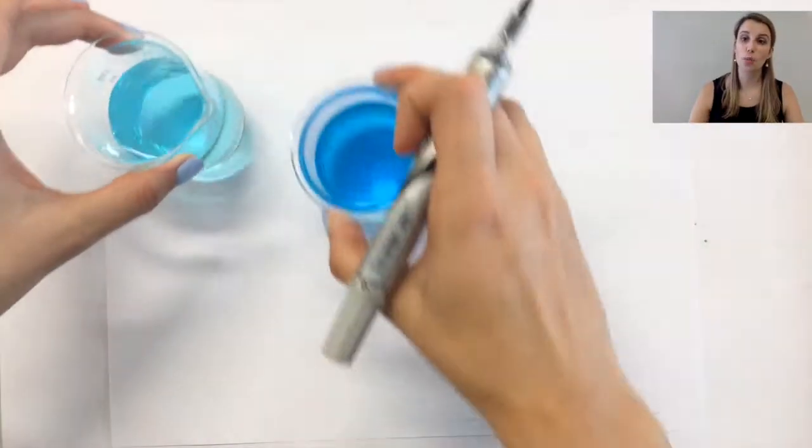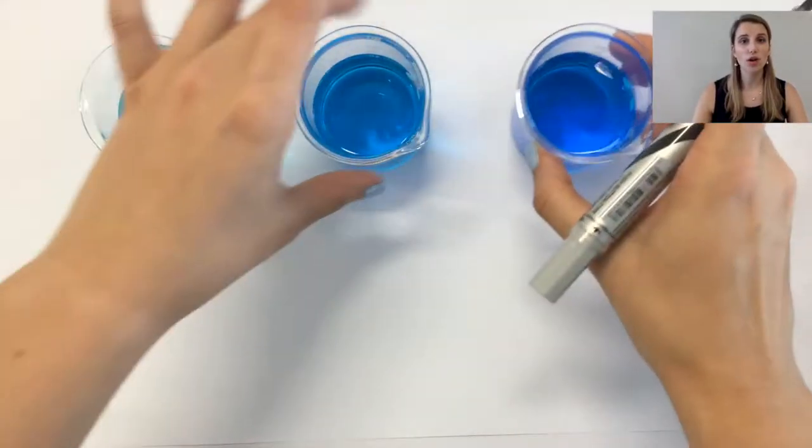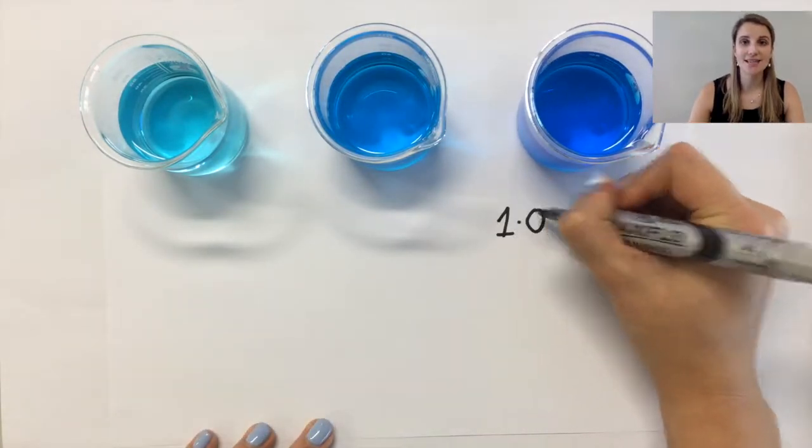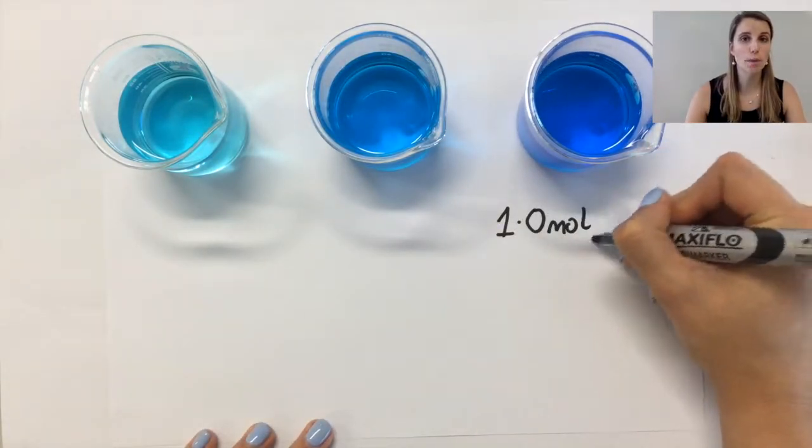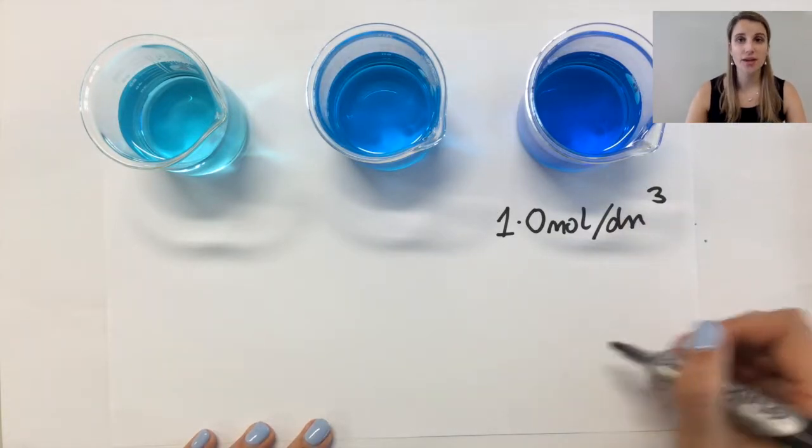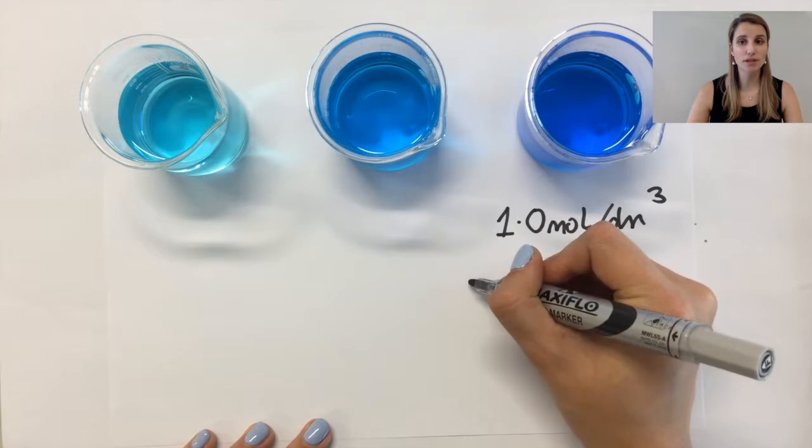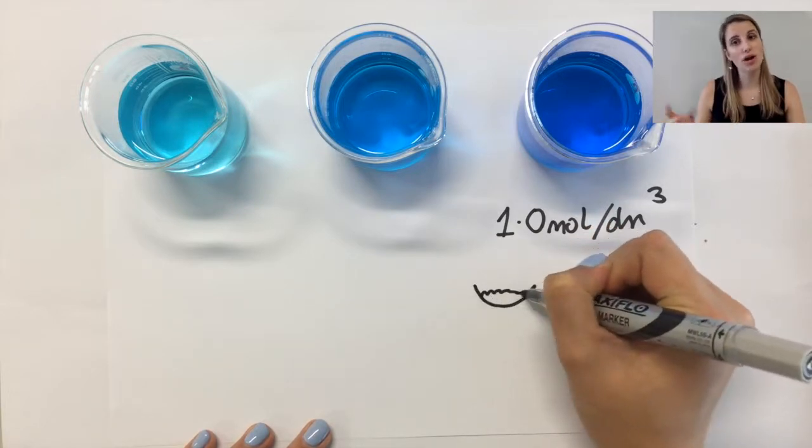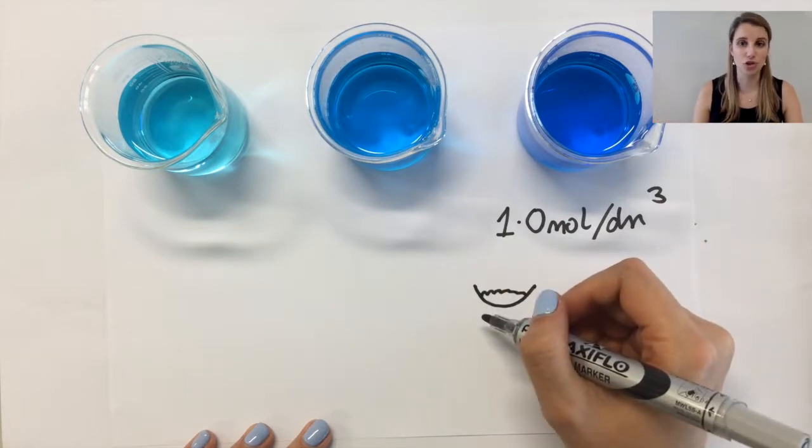Let's go back to our copper sulphate samples. The one on the right, the most concentrated of my three samples, is actually 1.0 moles per decimetre cubed of concentration. Now what this means is that I must have dissolved one mole of copper sulphate in one decimetre cubed of the solution.